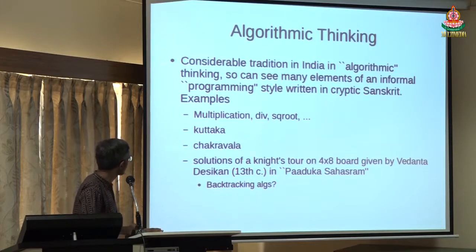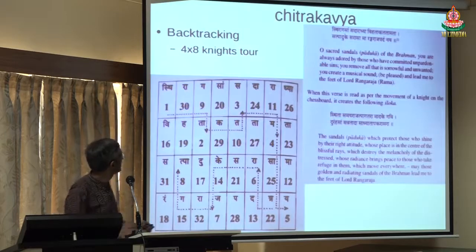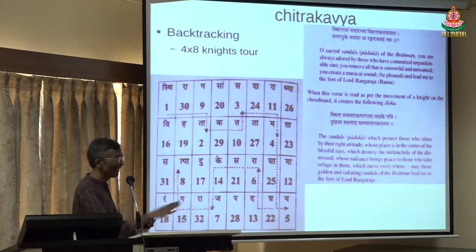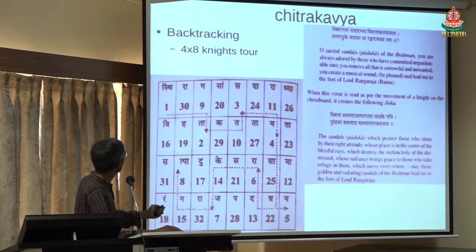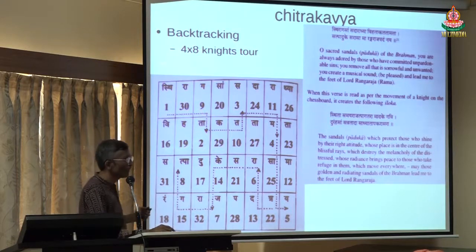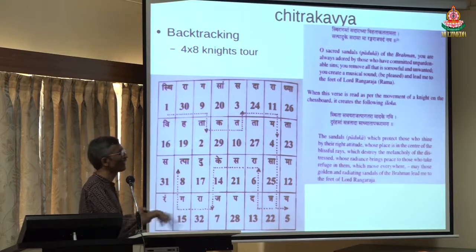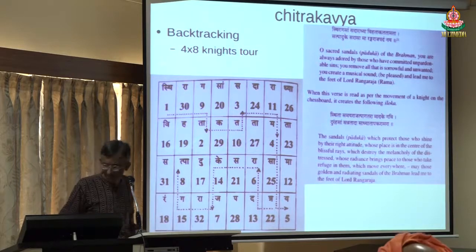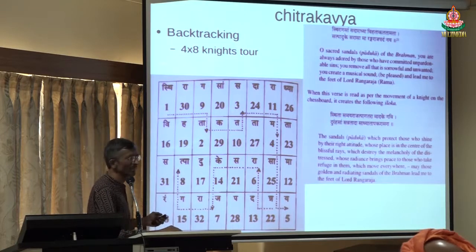Algorithmic thinking is very widespread in India. We have interesting examples of deep algorithms like Chakrawala. Here is an example of a backtracking algorithm — a poem called a chitrakavya. If you read it straight, you get one poem; but if you jump it the 'horse way' — like the knight's move in chess — every place you jump, you will find that a poem comes out. It turns out that in computer science, if you want to discover these structures, you need something called backtracking algorithms. As early as around 1000 AD, people were talking about this — Vedanta Deshika in one of his books has got many examples of such chitrakavyas.